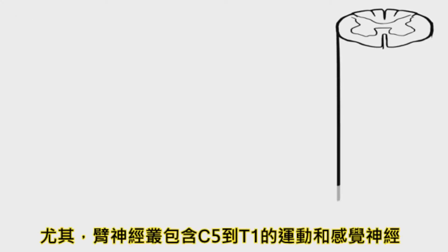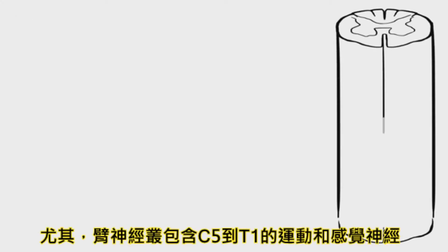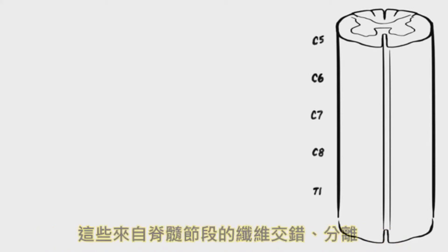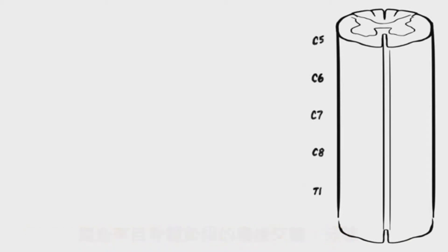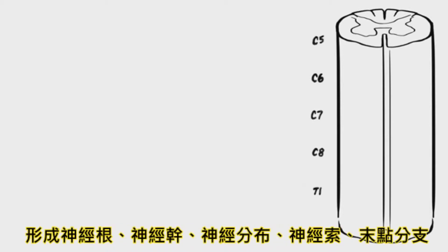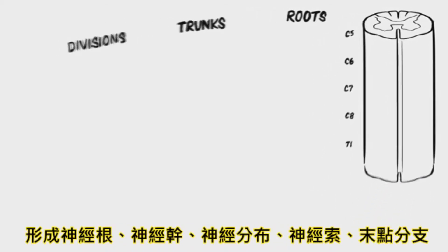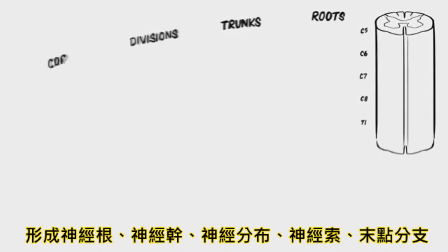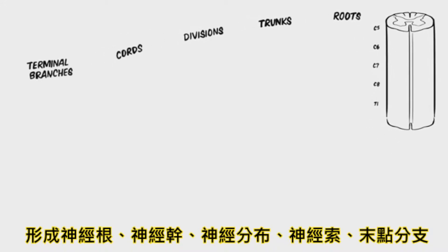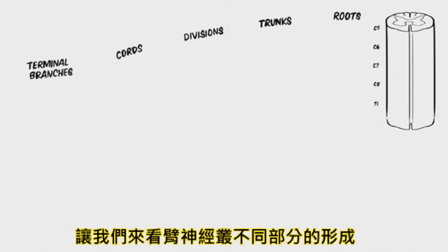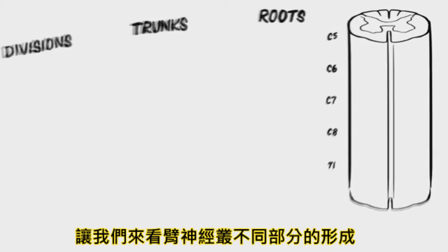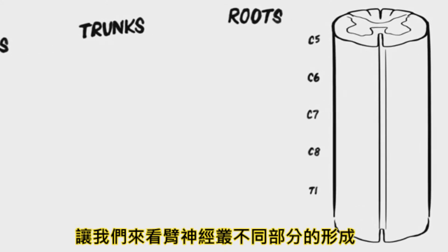Specifically, the brachial plexus contains motor and sensory fibers from spinal segments C5 to T1. Fibers from these spinal segments mix together and then segregate as they form first roots, then trunks, then divisions, then cords, and finally terminal branches. Let's look at how these different parts of the brachial plexus are formed.